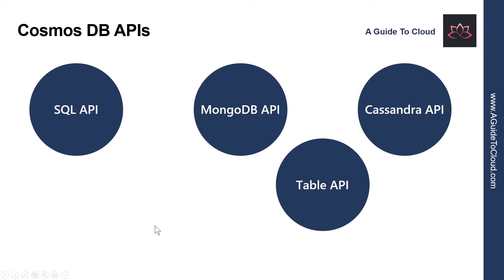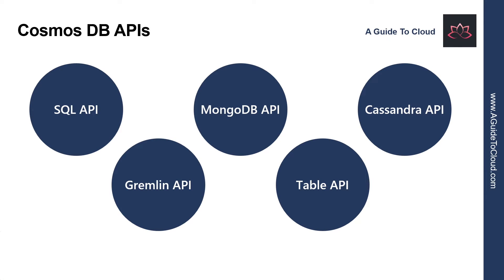And finally, let's understand Gremlin API. The Gremlin API implements a graph database interface to Cosmos DB. A graph is a collection of data objects and directed relationships. Data is still held as a set of documents in Cosmos DB, but the Gremlin API enables you to perform graph queries over the data. Using the Gremlin API, you can walk through the objects and relationships in the graph to discover all manner of complex relationships.